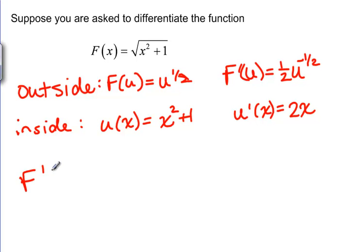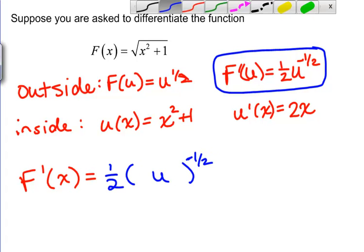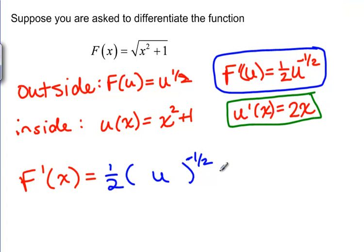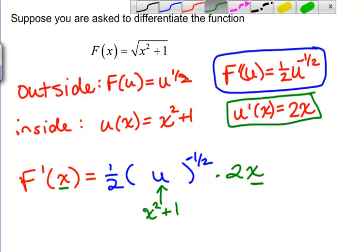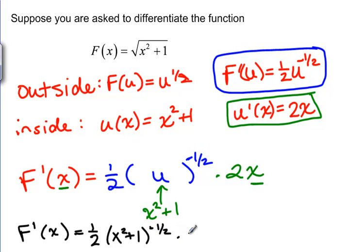How does that help us define F prime of X? According to the chain rule, it's going to be the derivative of the outside function — that's 1/2 U to the negative 1/2 — times the derivative of the inside function, which is 2X. Notice that this looks strange because our function is in terms of X but here we have U. We don't want U in our answer — we want X squared plus 1 — so F prime of X is 1/2 times (X squared plus 1) to the negative 1/2 times 2X.